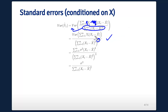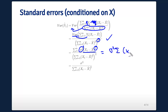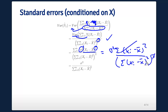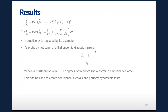The yᵢ's are all independent — not identically distributed because they have different means, but independent — so we can move the variance across the sum. When we pull the (xᵢ − x̄) part out it gets squared, and the variance of yᵢ is σ², so we get σ² times Σ(xᵢ − x̄)² over [Σ(xᵢ − x̄)²]², which simplifies to σ² / Σ(xᵢ − x̄)². You can do the same exercise to derive the variance for β̂₀.